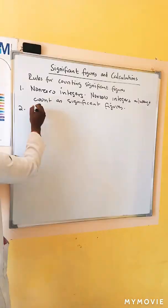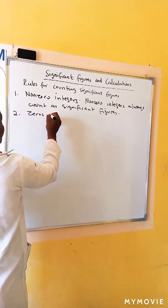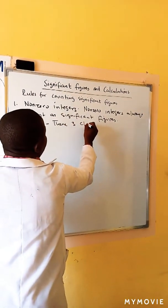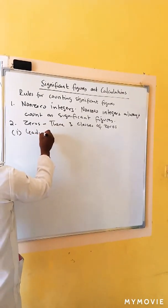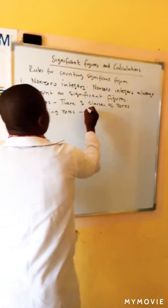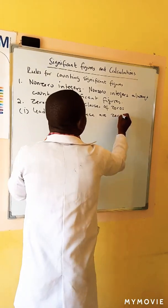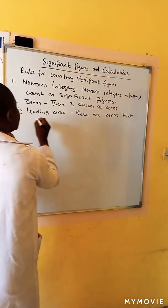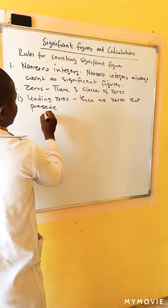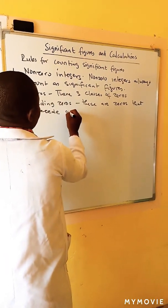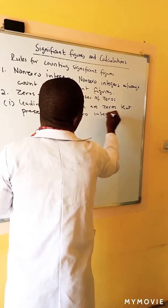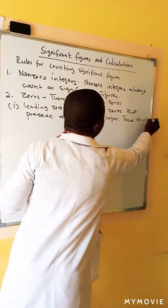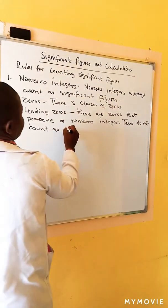Two: zeros. There are three classes of zeros. One: leading zeros. These are zeros that precede a non-zero integer. These do not count as significant figures.